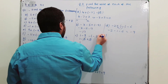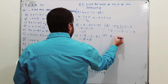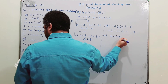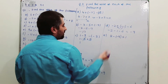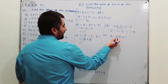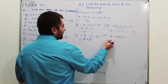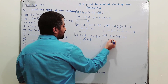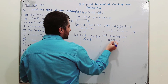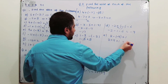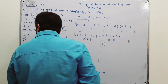Part E: 8 minus (minus 9) plus 1. Open the brackets — minus times minus becomes plus — giving 8 plus 9 plus 1. 9 plus 1 is 10, then plus 8 is 18.